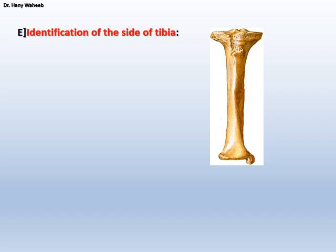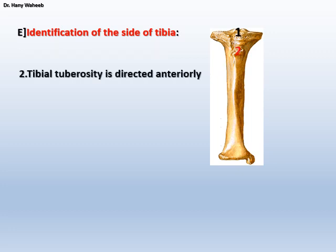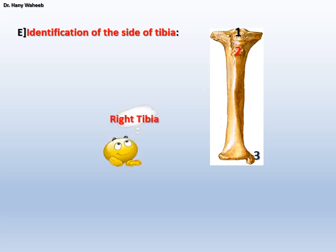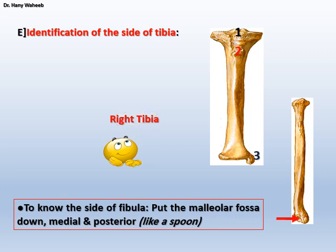For identification of the side of the tibia: 1. Tibial condyles are directed up; 2. Tibial tuberosity is directed anteriorly; 3. Medial malleolus is directed medially. Put the bone on yourself to confirm its side — right or left. This bone is a right tibia. Just for knowledge, to identify the side of the fibula, put the malleolar fossa down, medial, and posterior, like a spoon.